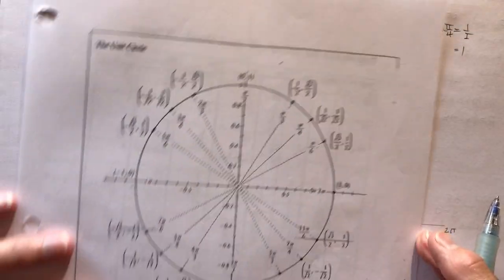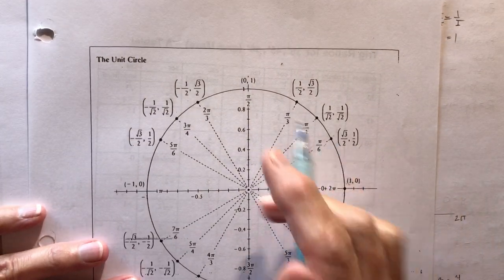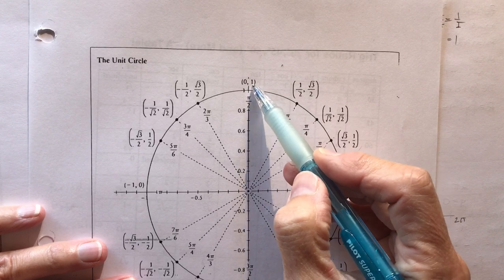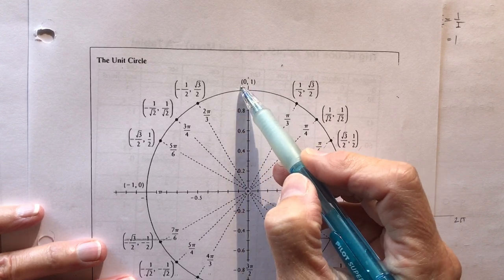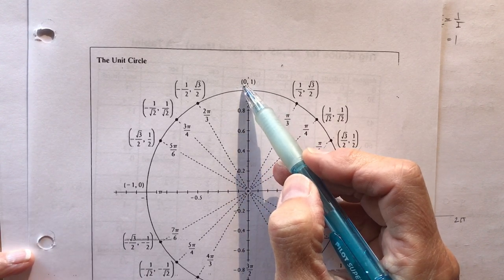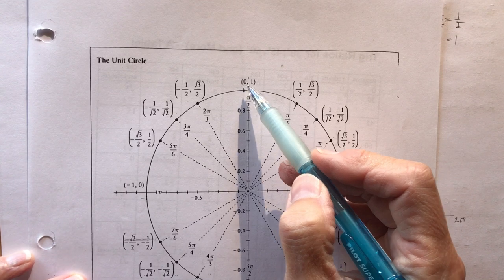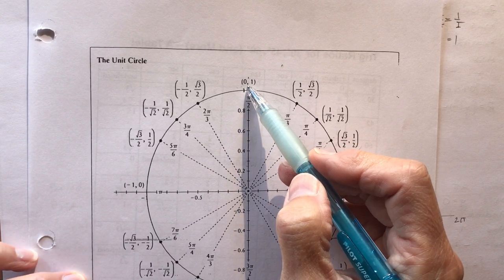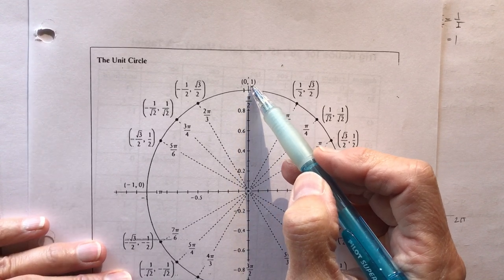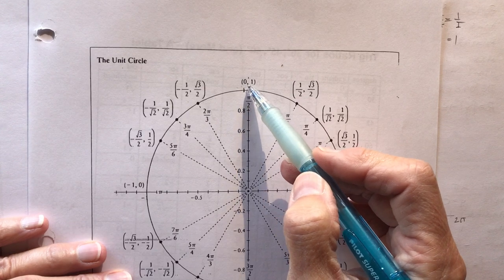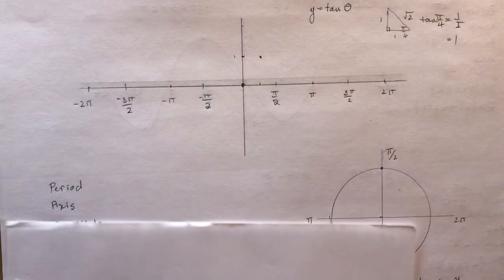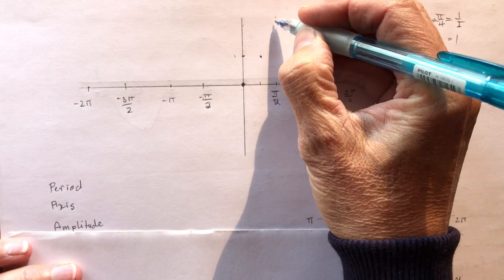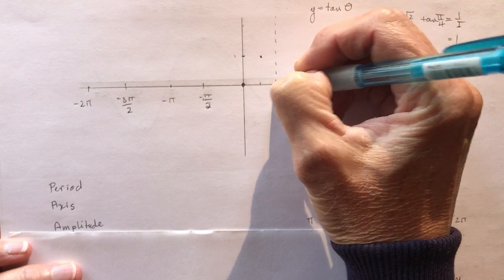And look what happens at pi over 2. Let's take a look again back at our unit circle. So I'm doing y over x. I have 1 over 0. And that should ring all sorts of alarm bells for you because you can't divide by 0 in math. So, or in anything. So 1 over 0 means it's going to be undefined at pi over 2. So we have an asymptote at pi over 2.